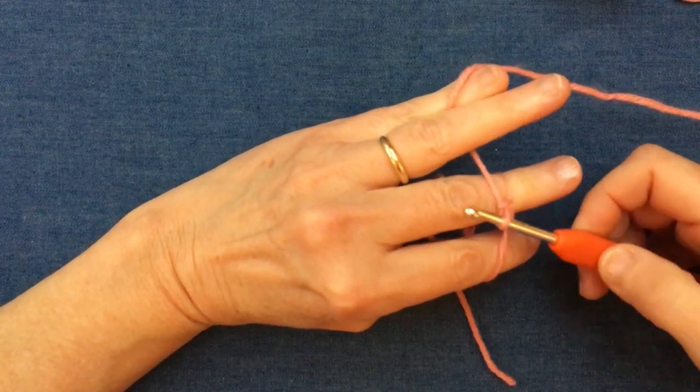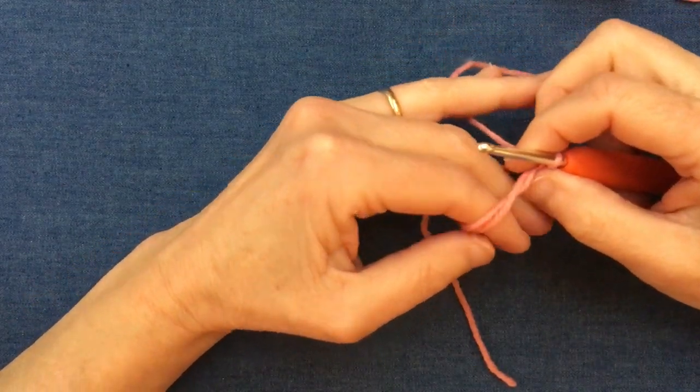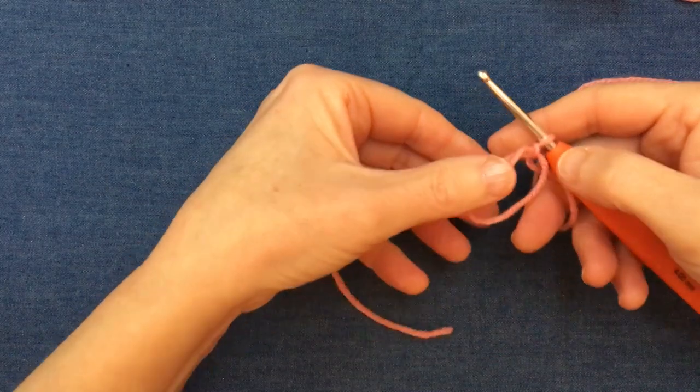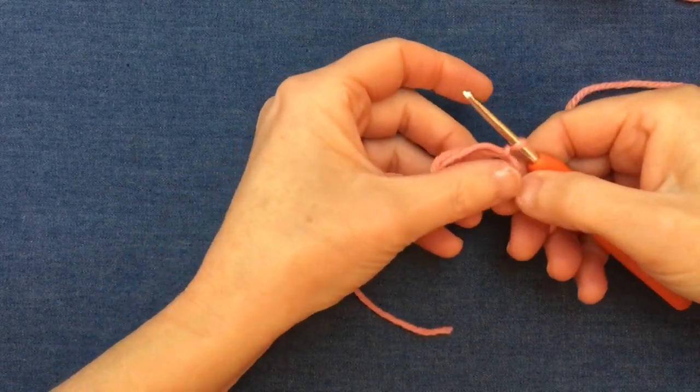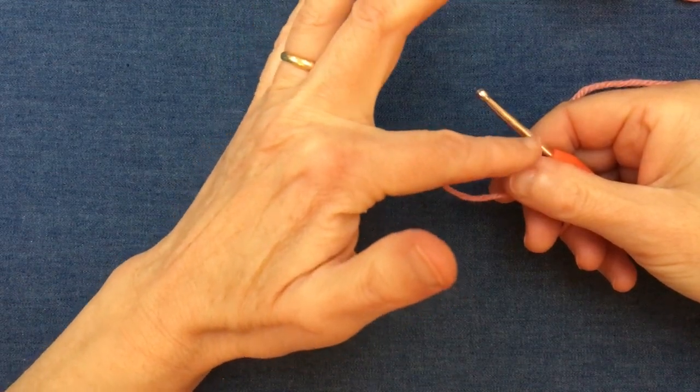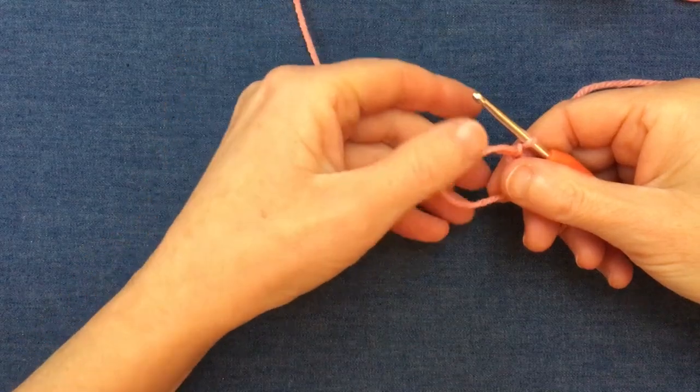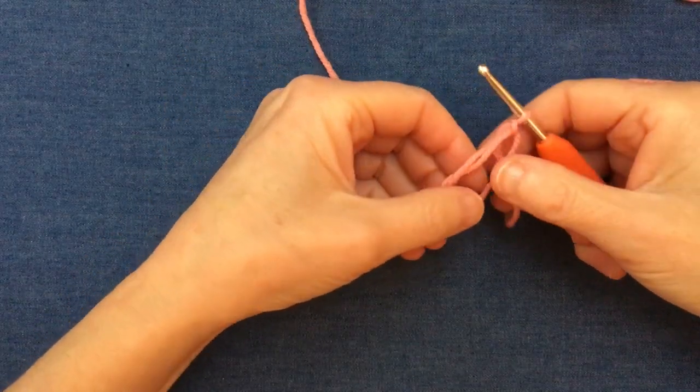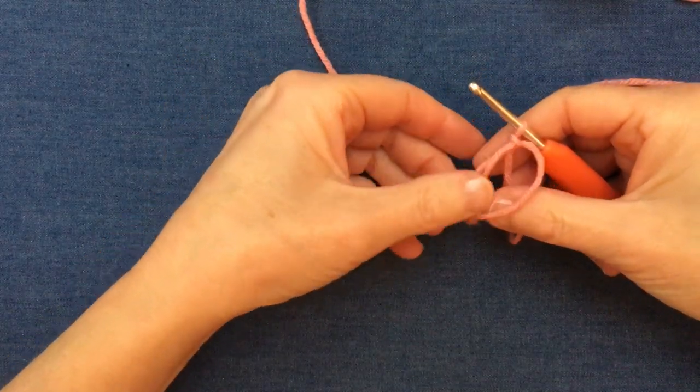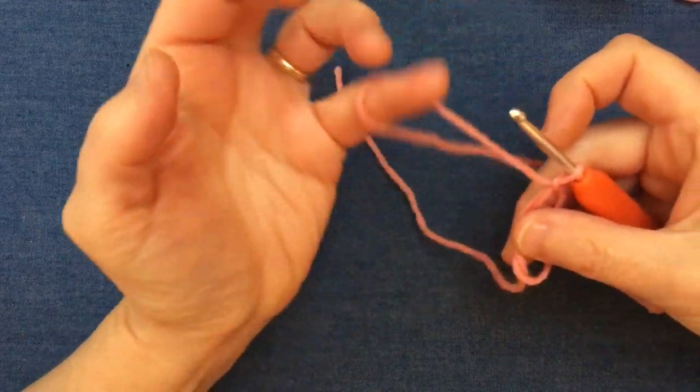And there we have that in place. Now I can take my fingers out. When I turn it over you can see I have my ring, and as well as that I've also got my extra thread from my tail wrapped inside the ring, which will make it much easier now for working my first round. So my ring is now ready to use and I'm going to begin.